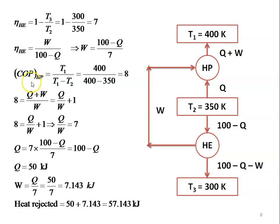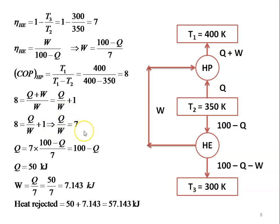For the heat pump, COP = T1/(T1 − T2) = 400/(400 − 350) = 8. COP is also equal to (Q + W)/W = Q/W + 1 = 8, so Q/W = 7, giving Q = 7W. Substituting W = (100 − Q)/7, we get Q = 100 − Q, so Q = 50 kJ. Then W = Q/7 = 50/7 = 7.143 kJ.